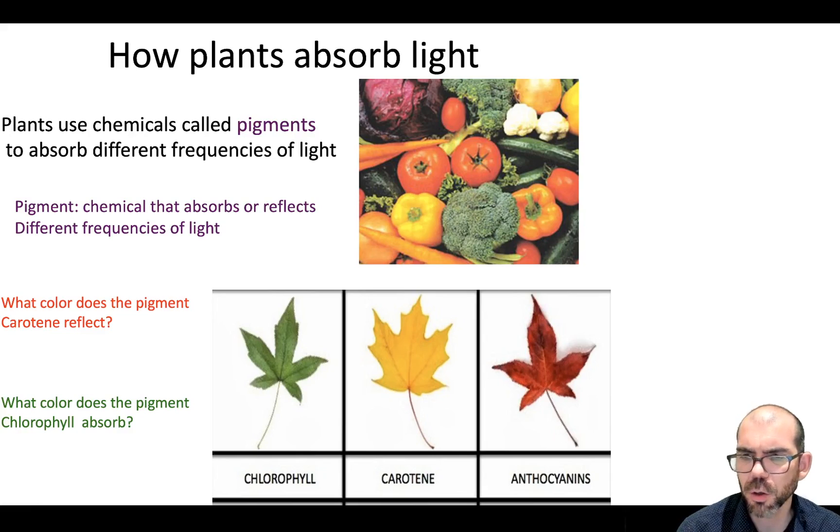What about this leaf with chlorophyll? What color does the pigment chlorophyll absorb? Well, since I can see green, that means all other frequencies of light are being absorbed. So the chlorophyll is absorbing reds and blues and violets.